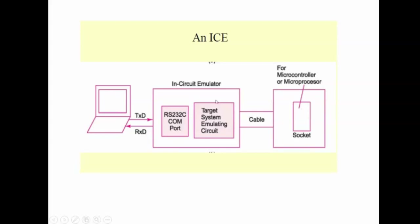At the same time, the in-circuit emulator interfaces with the target system through cables, and it replaces the CPU of the target board. The in-circuit emulator emulates — that is, replaces — the CPU of the target board and allows the software program to run on the target board, checking the status of internal registers of the CPU, memory registers, and signals. If any error occurs, that error can be rectified.